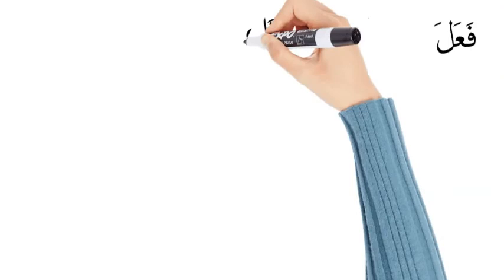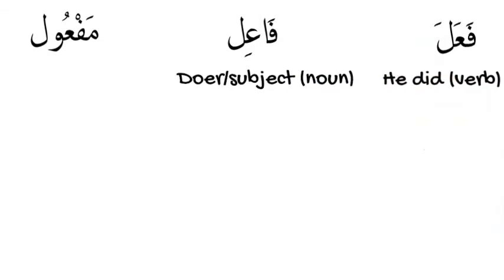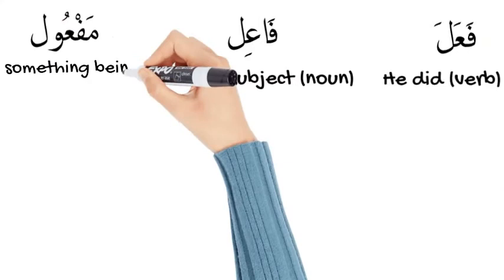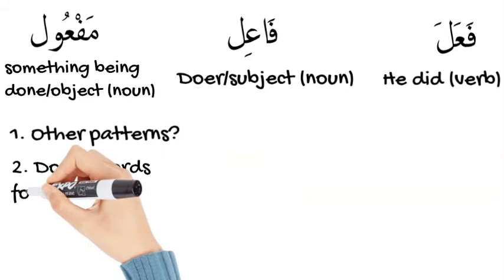So far we've talked about three main patterns: فَعَلَ, فَاعِل, and مَفْعُول. فَعَلَ is the past tense of the verb for a male, meaning 'he did' — it's a verb. فَاعِل is the person who does the action — the doer or the subject — and it's a noun. مَفْعُول is something that is being done — the object — and it's also a noun.